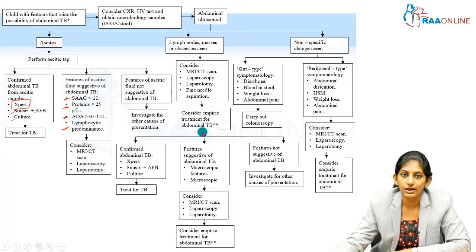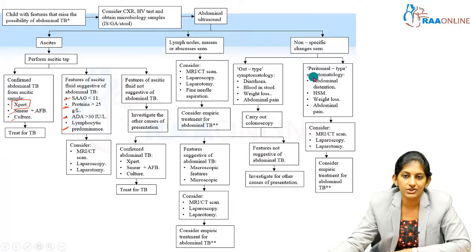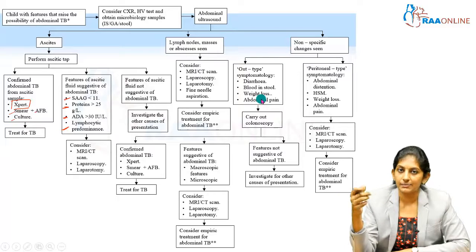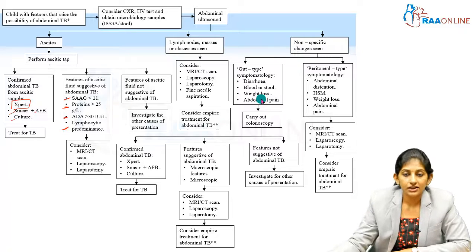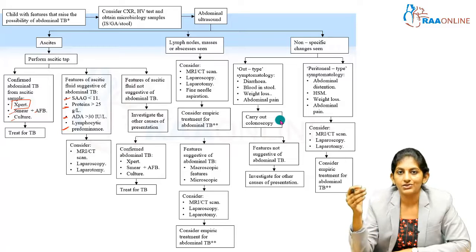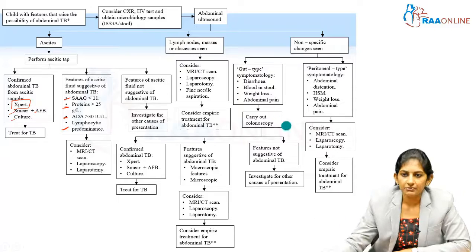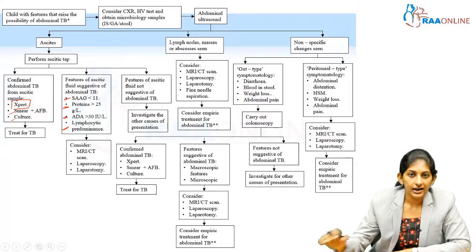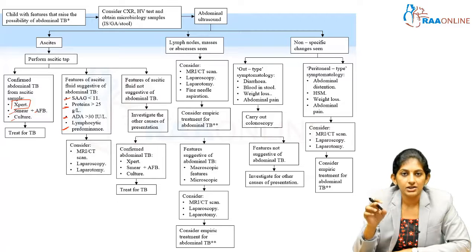If AFB is identified on FNA, treat as abdominal tuberculosis. If there are non-specific changes on ultrasound and the child has gut-type symptoms — diarrhea, weight loss, blood in stools, abdominal pain, or an inflammatory bowel disease-like presentation resembling ulcerative colitis or Crohn's disease — proceed to colonoscopy. On colonoscopy, ulcers or strictures can be directly visualized, and colonoscopy-guided biopsies can be taken to identify AFB. For peritoneal-type symptomatology, do imaging and consider laparoscopy or laparotomy. The aim is to identify AFB, perform Gene Xpert, and start empiric treatment for tuberculosis as soon as possible.